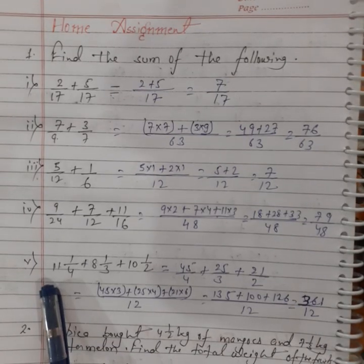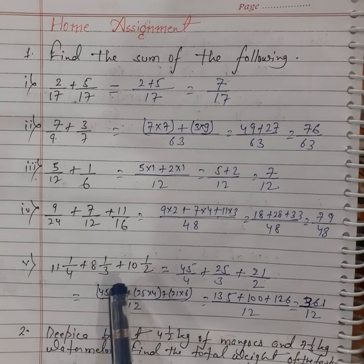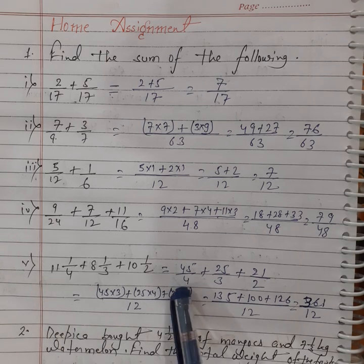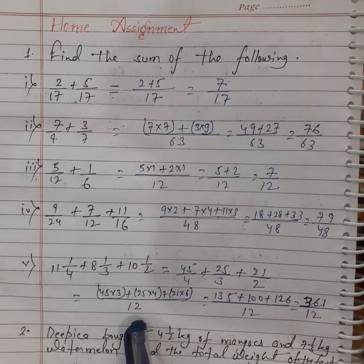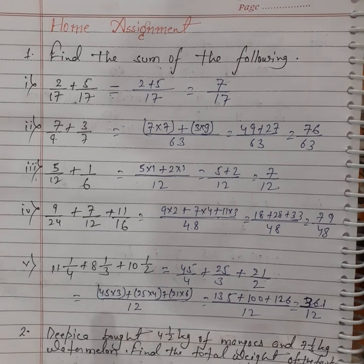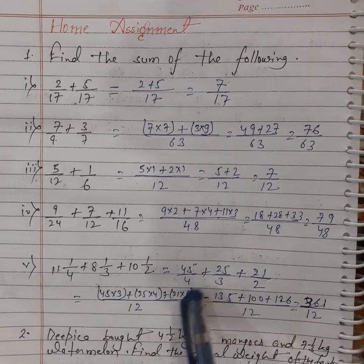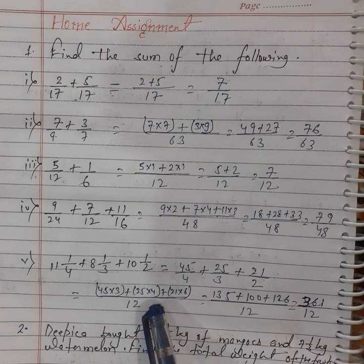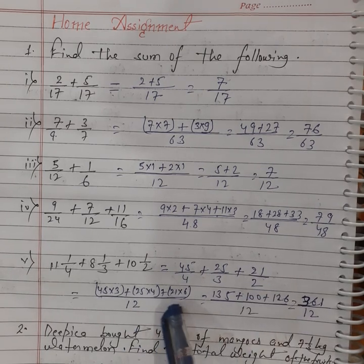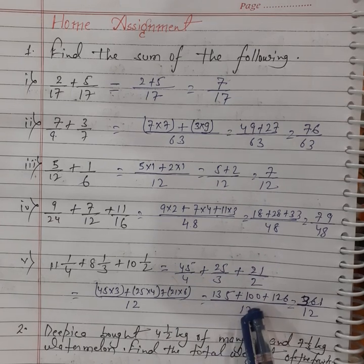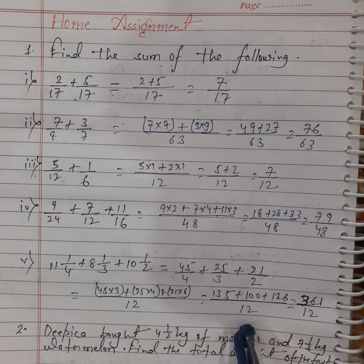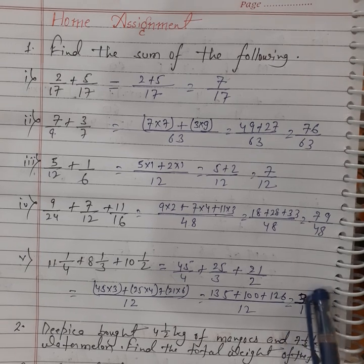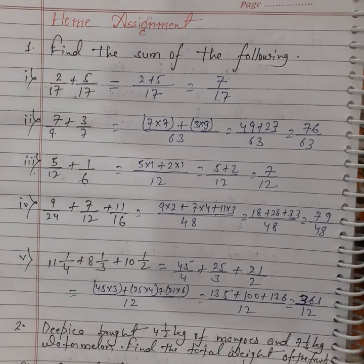Fifth: 11 whole 1 by 4 plus 8 whole 1 by 3 plus 10 whole 1 by 2. First, we change the mixed fractions into improper fractions. Then we find the LCM, which is 12. 12 divided by 4 gives 3; 45 into 3, plus 12 divided by 3 gives 4; 25 into 4, plus 12 divided by 2 gives 6; 21 into 6. That is 135 plus 100 plus 126 over 12. The answer is 361 by 12. You can also convert the improper fraction into a mixed fraction.